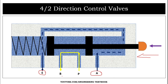So we have seen two conditions: in the first condition, port A and P are connected; in the second condition, port A and E are connected. In the 4 by 2 direction control valve, there is no position where all four ports remain closed. It operates simultaneously and is never in a rest or neutral position.